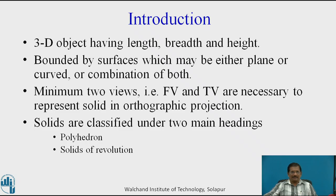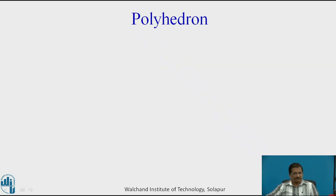Solids are classified under two main headings: one is polyhedron and another is solids of revolution. First we will discuss about polyhedrons.